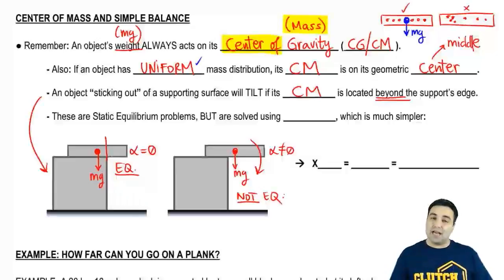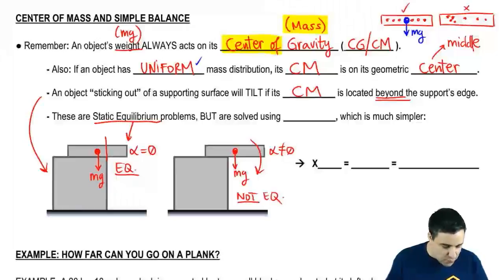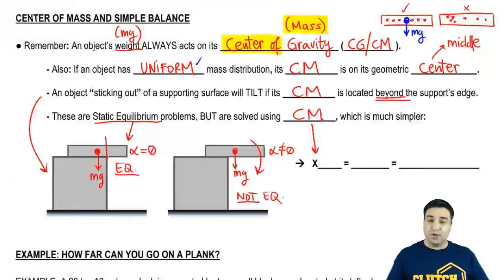So if you want an object not to tilt, you want this situation here. And this is static equilibrium. So some questions will ask, what's the farthest you can place this object so that it doesn't tilt? And we're going to solve these problems using center of mass equation, which I'll show you here, which is actually going to be much simpler. These are not torque problems, though they show up in the middle of a bunch of torque equilibrium questions.